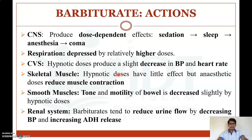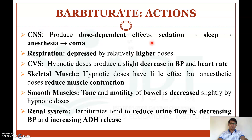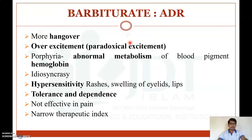In skeletal muscle, hypnotic doses have little effect, but anesthetic doses reduce muscle contraction. In smooth muscles such as the GIT, hypnotic doses slightly decrease bowel tone and motility. In the renal system, barbiturates reduce urine flow by decreasing blood pressure and by increasing antidiuretic hormone release.